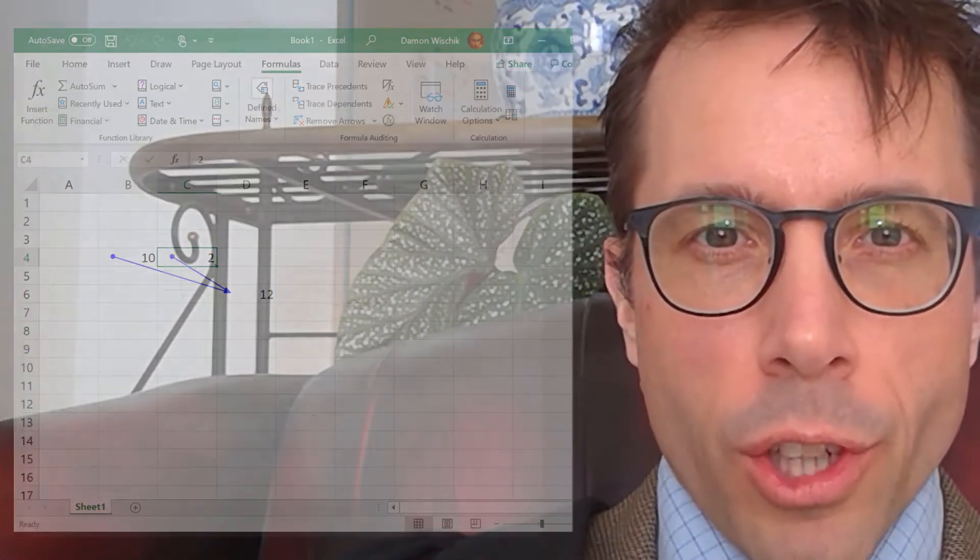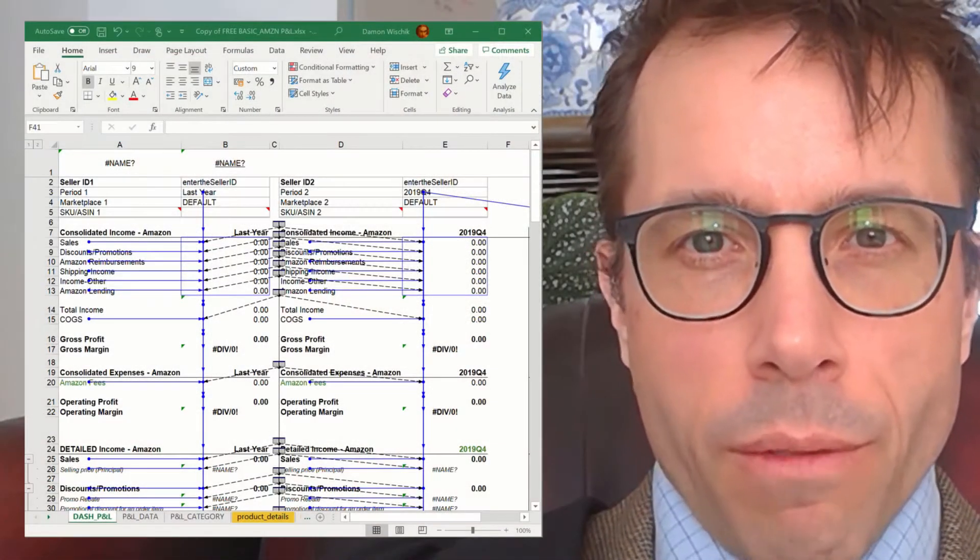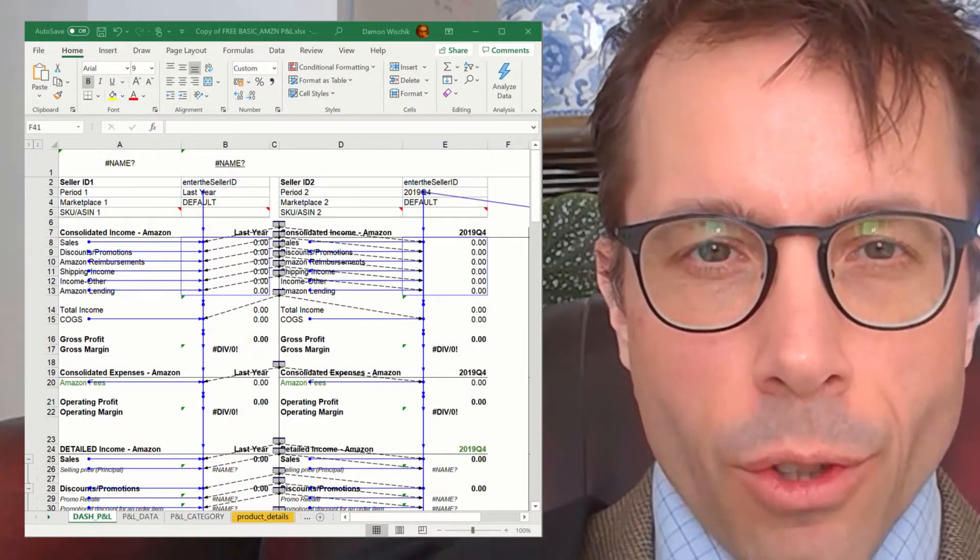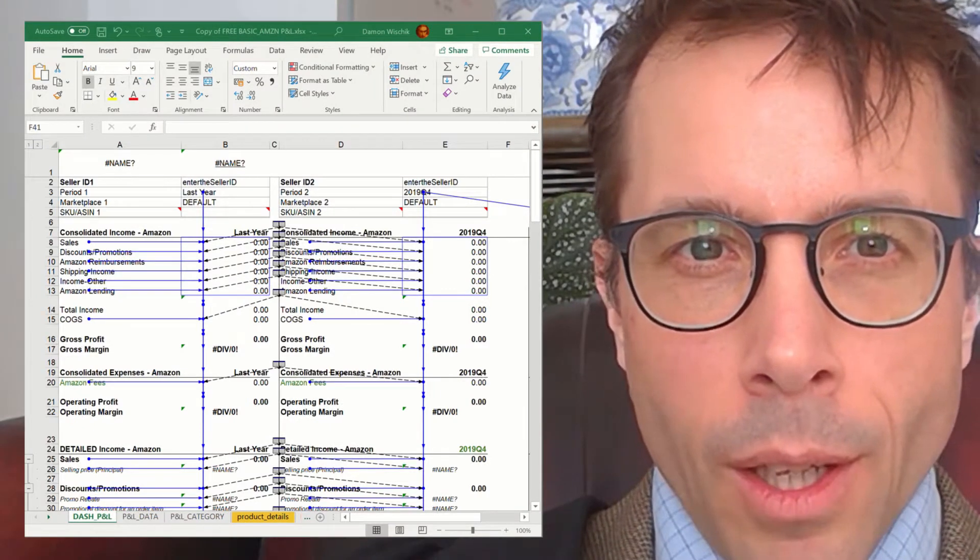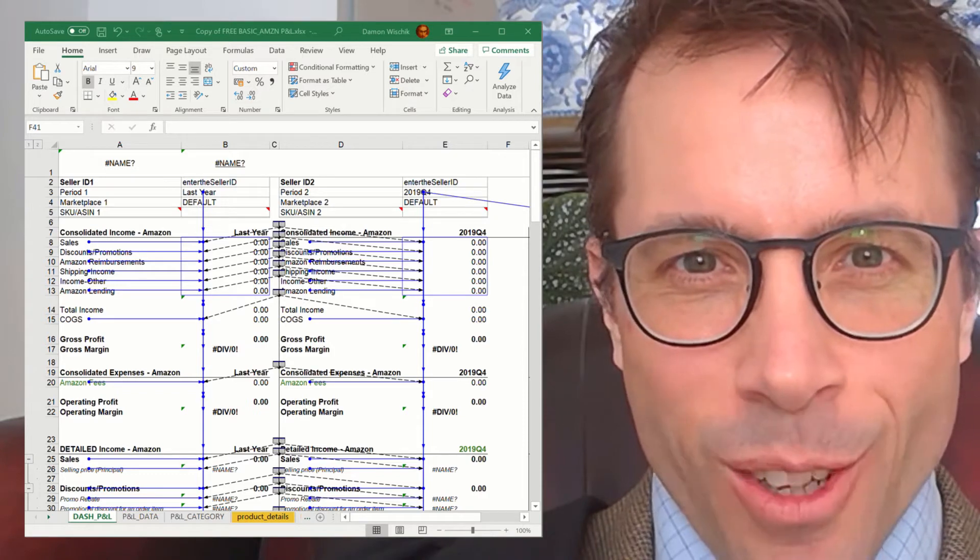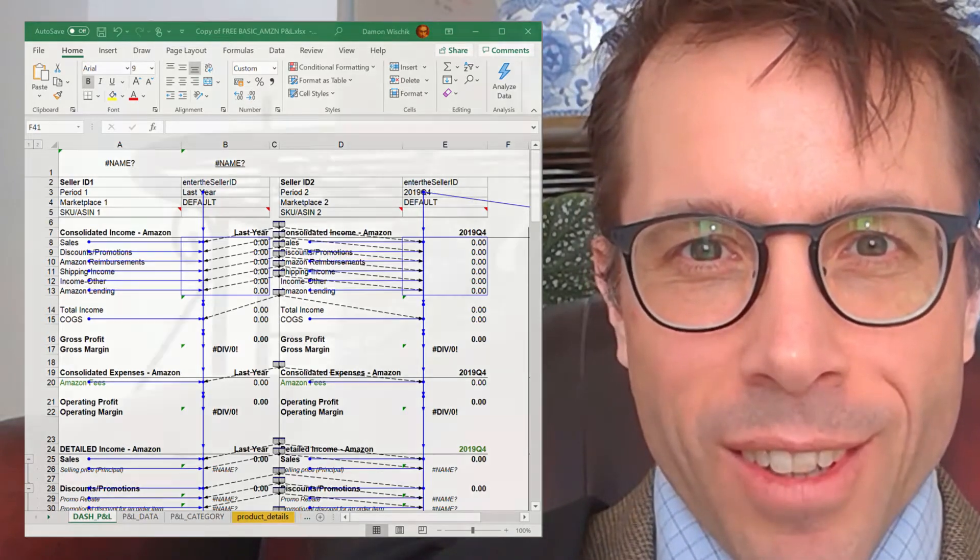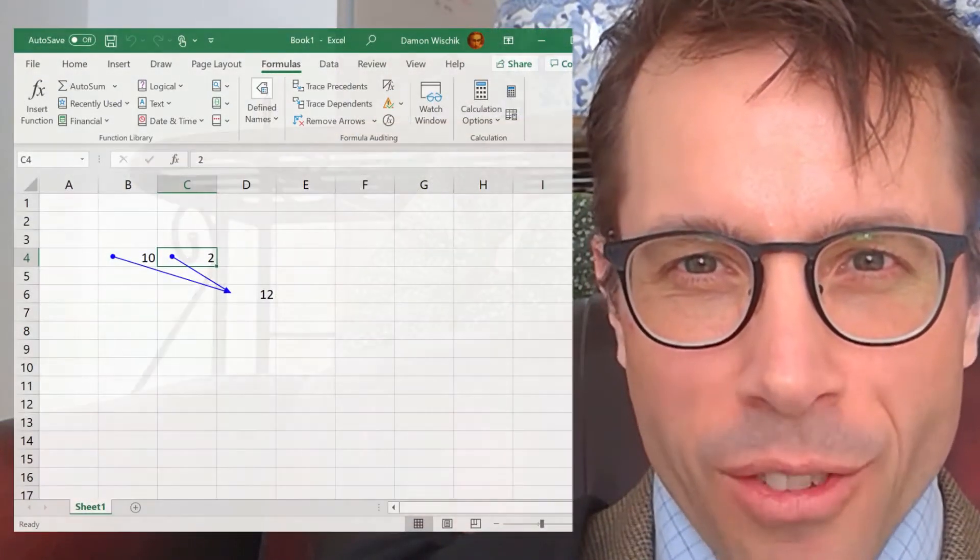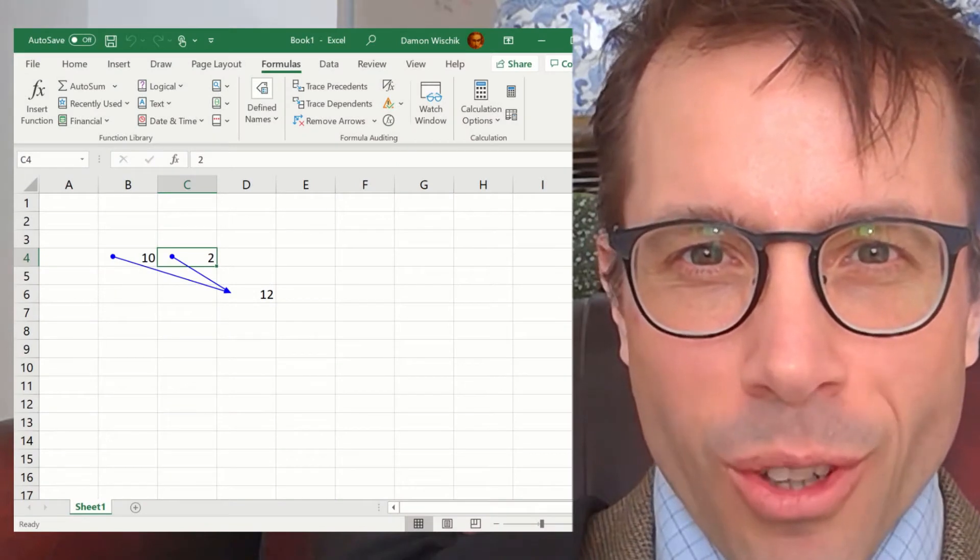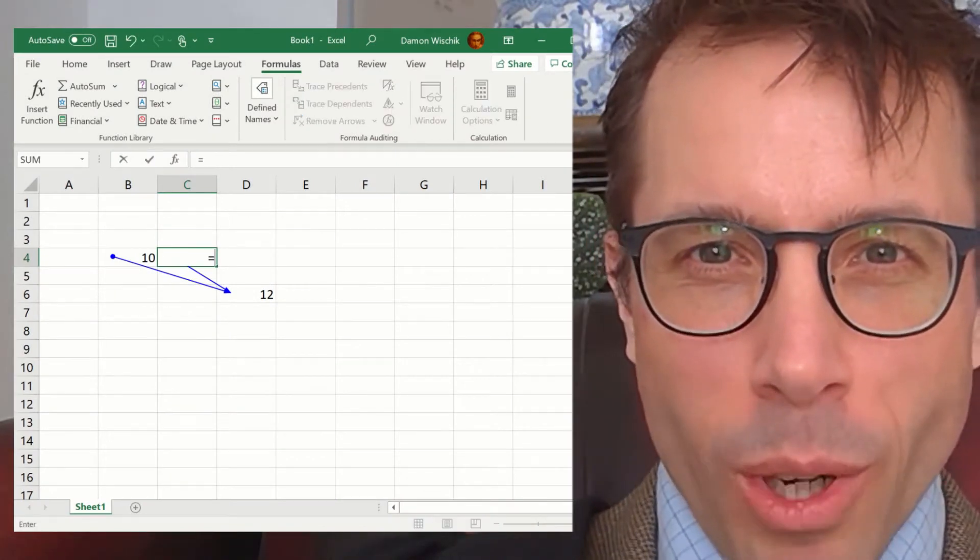If you're a normal person, you think that's neat and could be really helpful when trying to understand a big complicated spreadsheet. But if you're a computer scientist, you think: can I break this? Let's think - the bottom right cell d6 depends on the top two, but what would happen if I made one of the top cells, c4 for example, depend on d6?